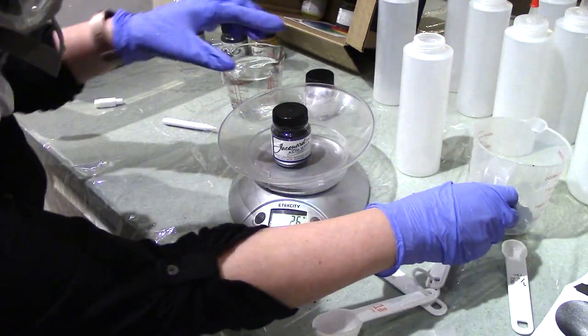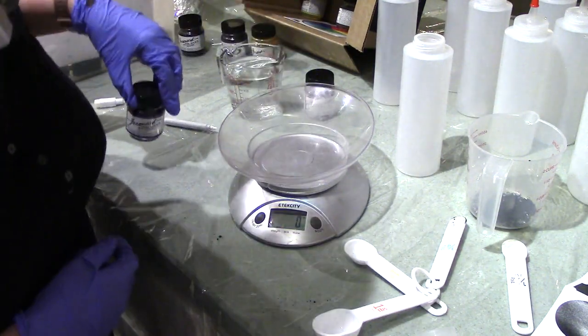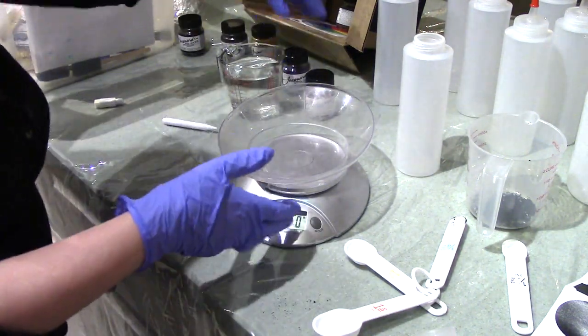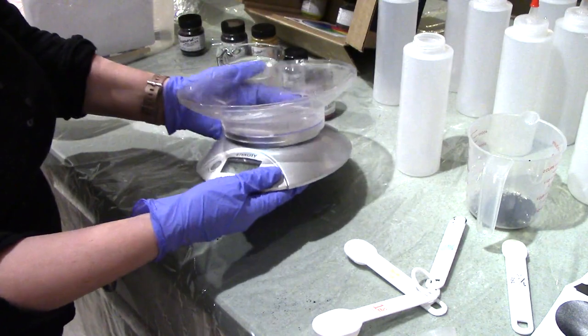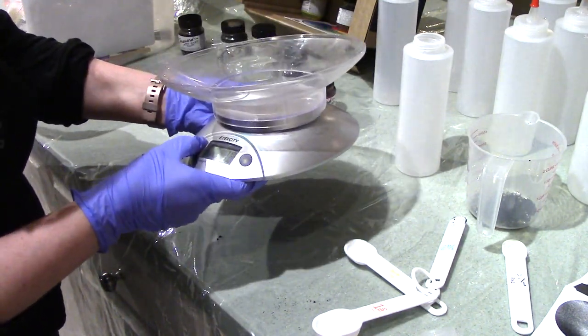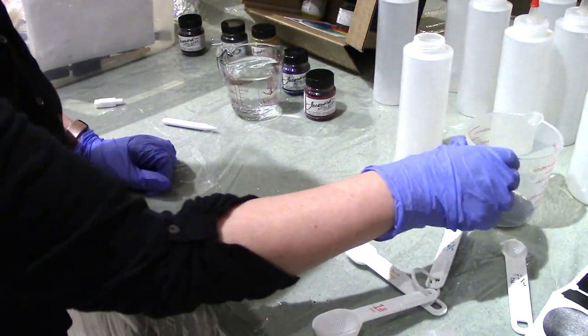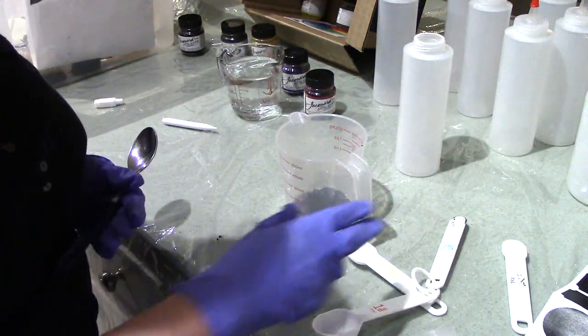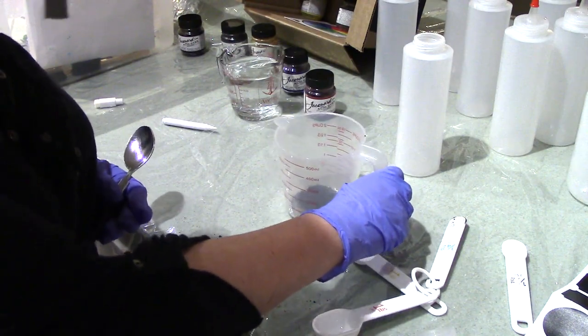Because 29 minus 26 is three. Now, if this had been working the way that I was hoping it would, I wouldn't need to do that. So now I have my dye powder here and I know it's three grams of dye powder.